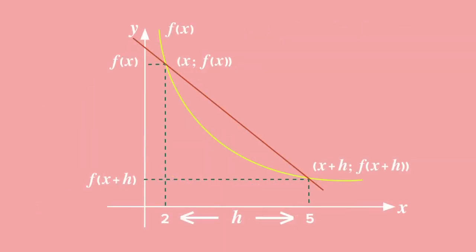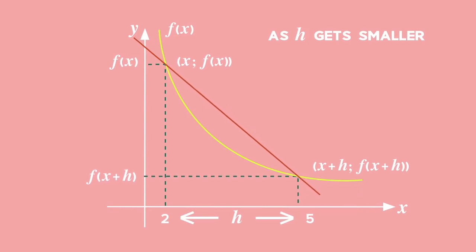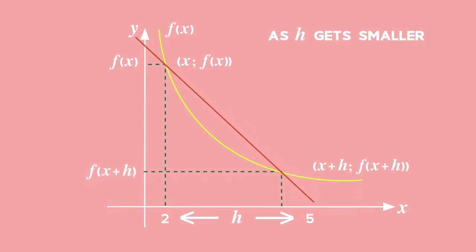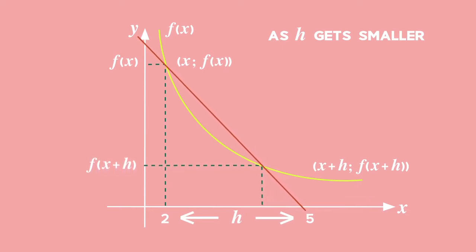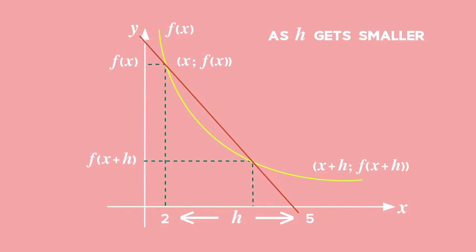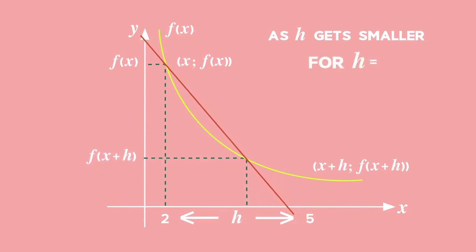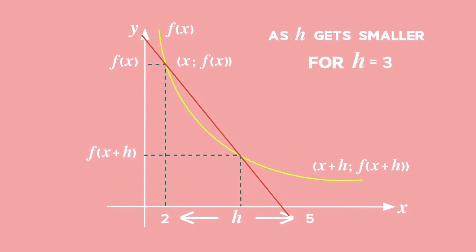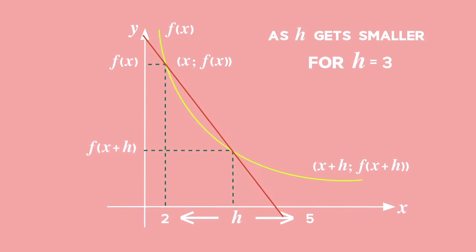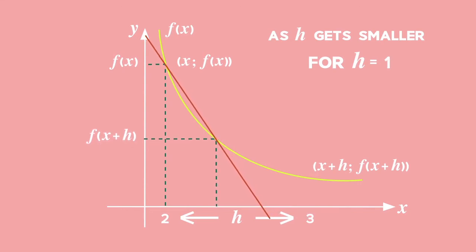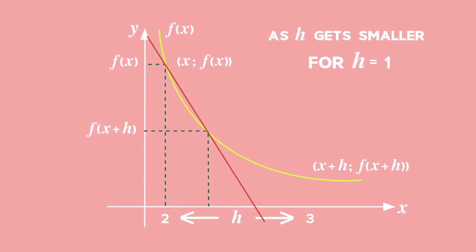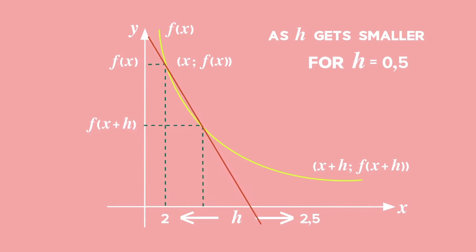Now, as h — the distance between the two x values — gets smaller, the two points get closer together. Let's look at an example. Let x equal 2 for the graph and h, the distance between the points, equal 3. If we decrease the distance between the two x values such that h equals 1, the points get even closer. And if we decrease the distance such that h equals 0.5, the points get closer still.